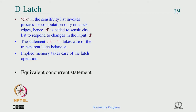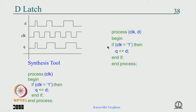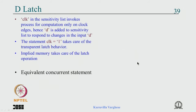Can we have a concurrent statement equivalent to the latch? The crux is: if clock = '1' then q <= d; end if. So you can say: q <= d when clock = '1' — and terminate it without saying else. That gives an implied latch and works perfectly. So the equivalent concurrent statement is: q <= d when clock = '1'. Whenever there is an event on d or clock, this will be computed — if clock is 1, q gets d; otherwise it remembers.